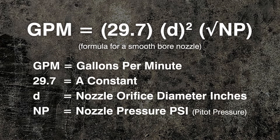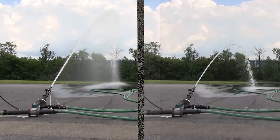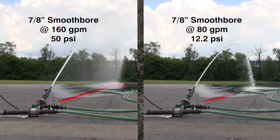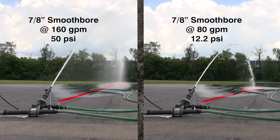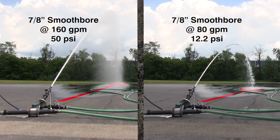In Video 2, How a Nozzle Works — Smoothbore, we showed the pressure versus flow relationship of a smoothbore nozzle and how it follows the flow formula. We saw that when the flow was divided in half, the pressure is divided by 4.